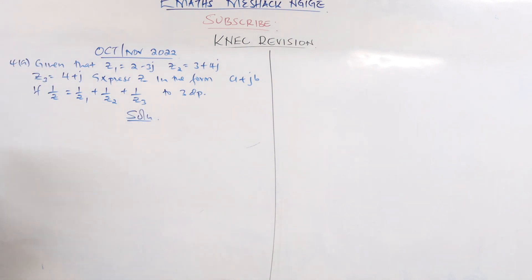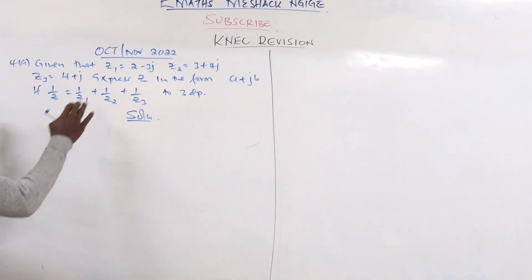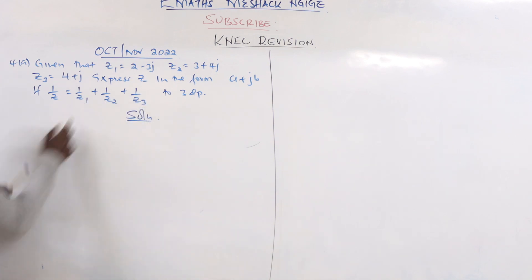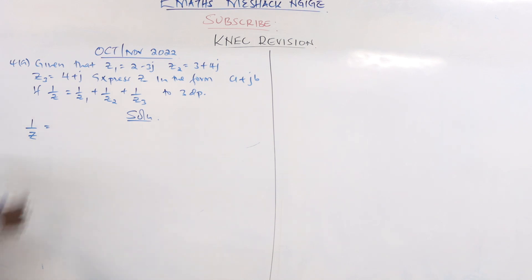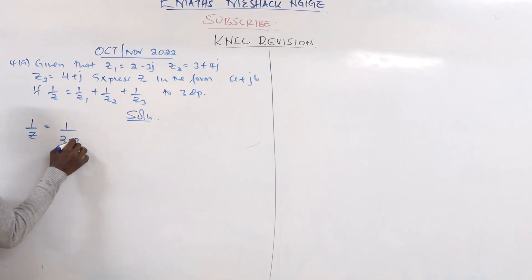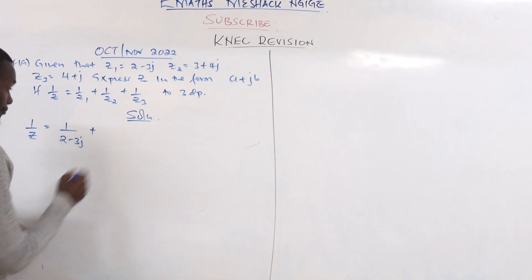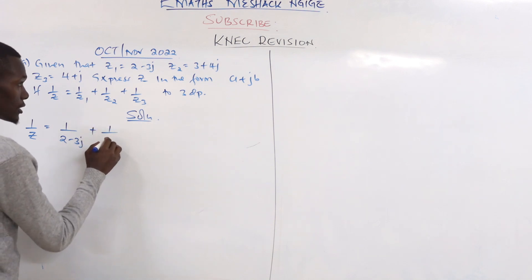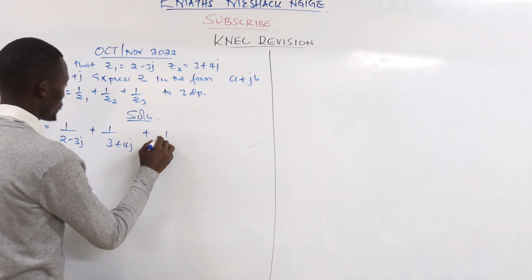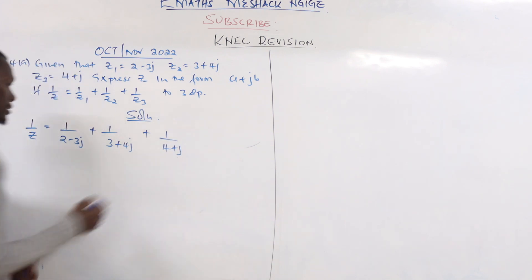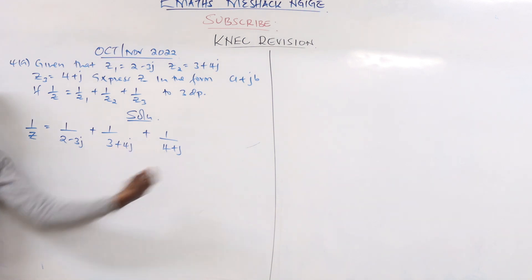You can do this question in two ways. We'll look at one method first, then explain the second. We know 1/z is given by 1/z1 + 1/z2 + 1/z3. So 1/z = 1/(2 - 3j) + 1/(3 + 4j) + 1/(4 + j). This is just the expression for 1/z.